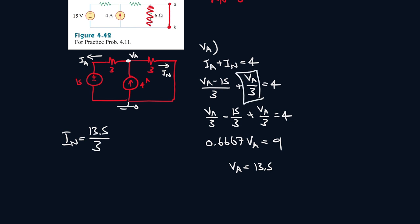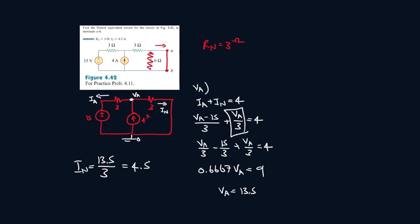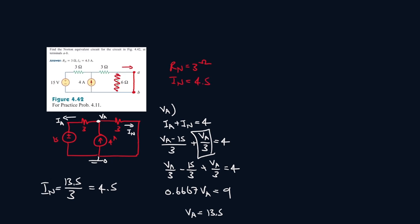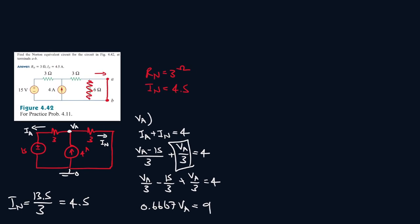And that gives you 4.5, so IN is equal to 4.5. And let's draw the Norton circuit. So there's a current here, 4.5 amps, our resistor here 3 ohms, and then we copy this portion of the circuit over here, so it'll be A, B.